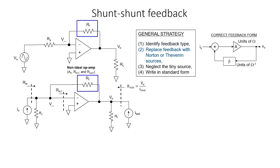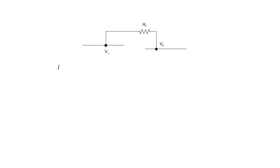Step 2 in our general strategy is to replace the feedback resistor with Norton or Thevenin sources. The correct feedback form tells us whether we need to replace it with a Norton source or a Thevenin source. In this situation, since we need current on the input side, we should use a Norton source. Our strategy is to split the feedback so that the resistor RF isn't connecting the output and the input. Looking forward through the feedback network, we need to find the Norton equivalent source. The Norton equivalent resistance is not just RF because there are other resistors connected to this node; however, RF is a good approximation.